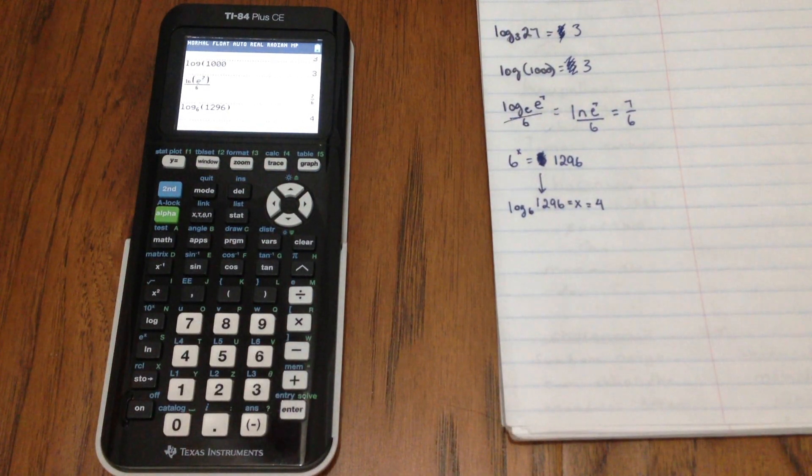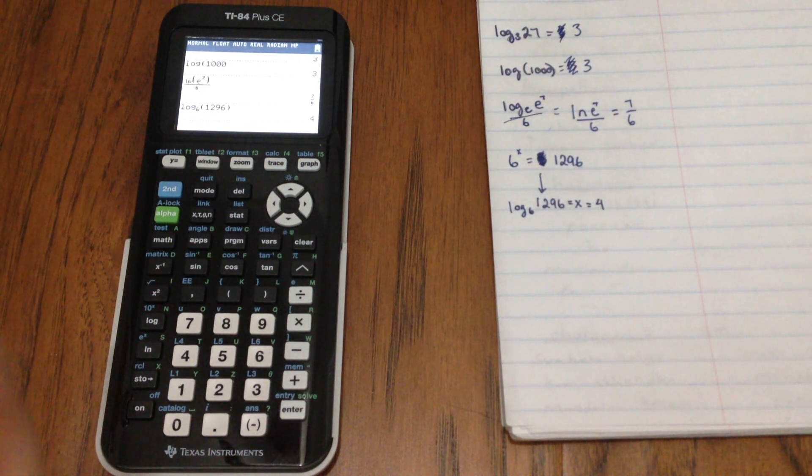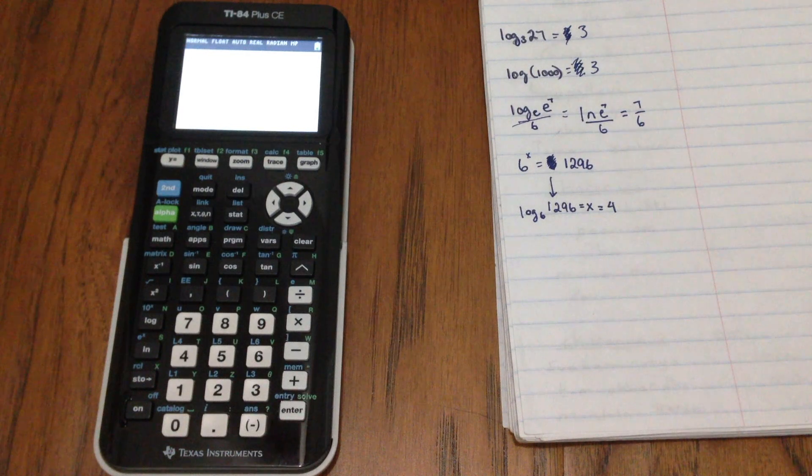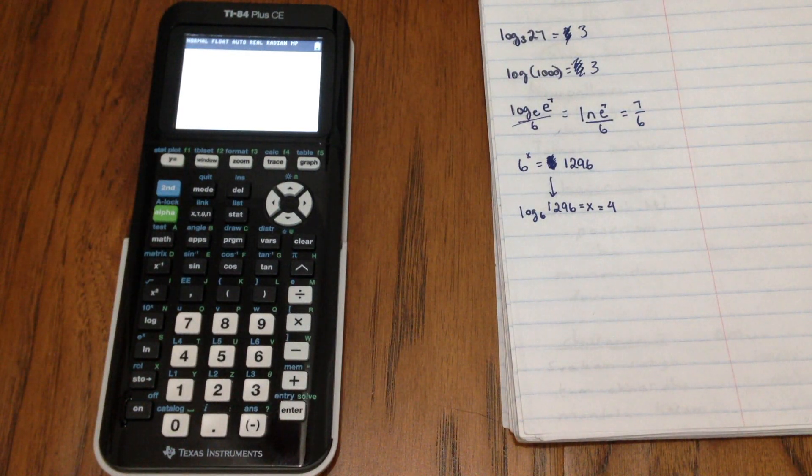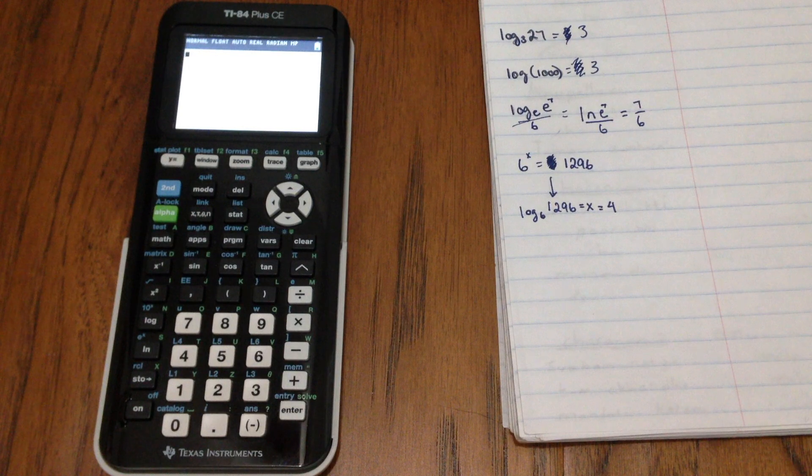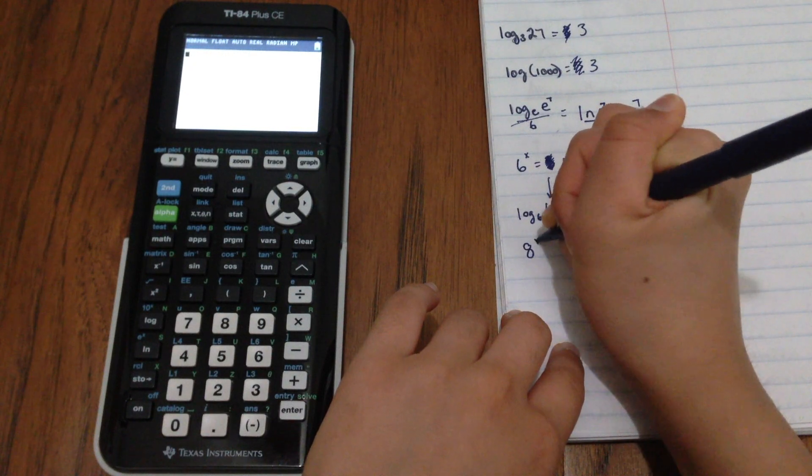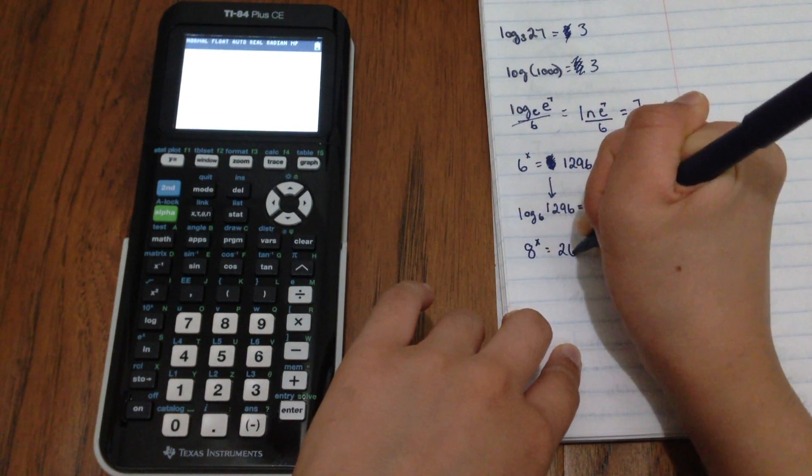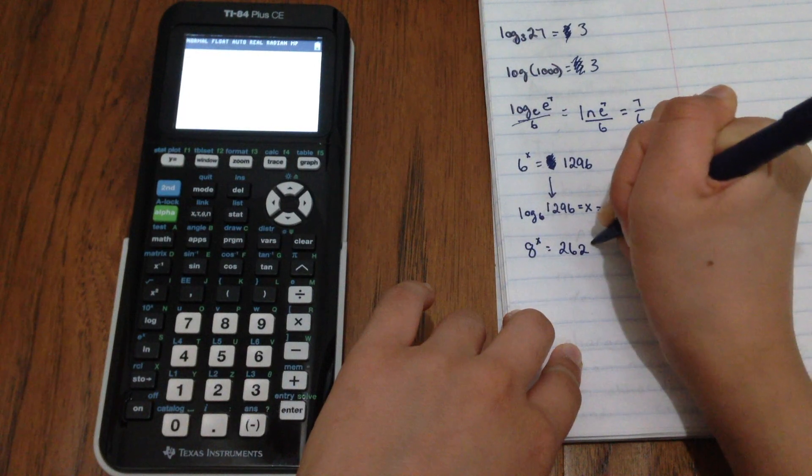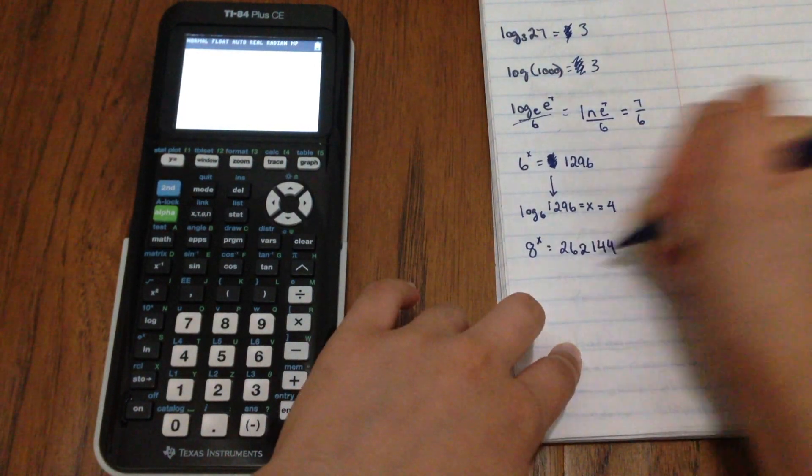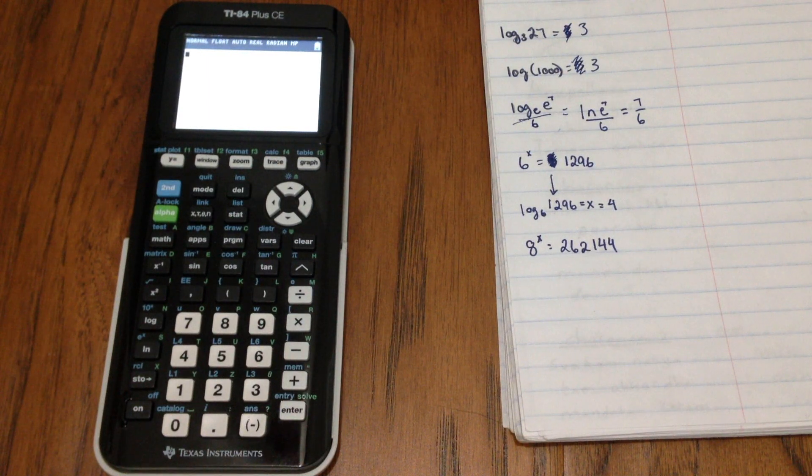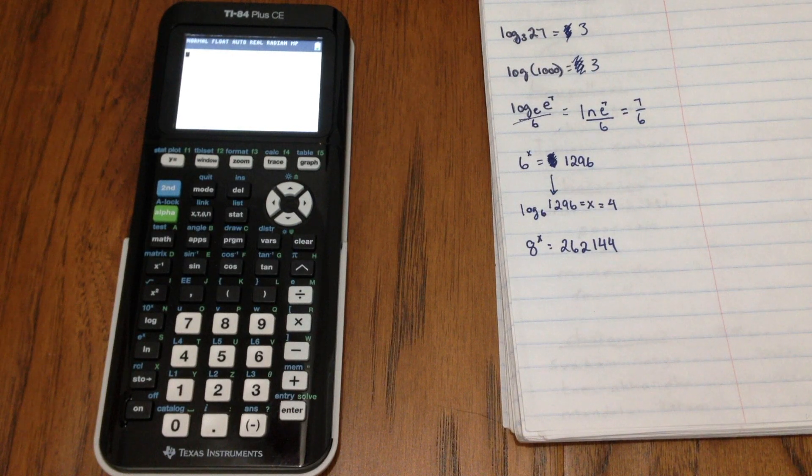So your homework for today is to solve this problem and leave your answer in the comments. And let me know if you were able to solve this problem using the calculator skills that you learned today. So, 8 to the power of x is equal to 262,144. Solve for x and try to do it using your calculator and letting me know if you were able to solve it.